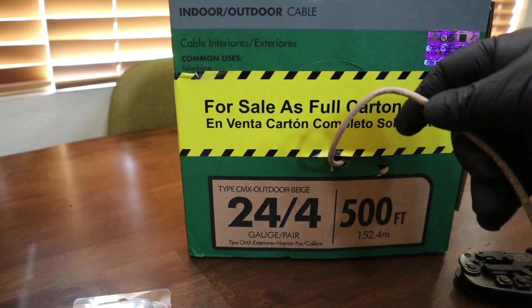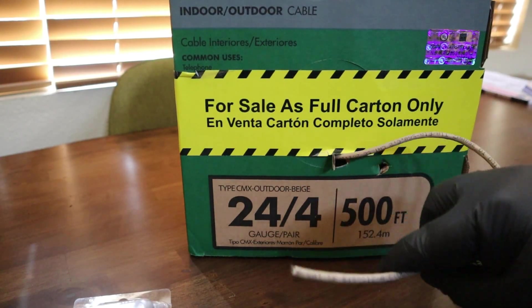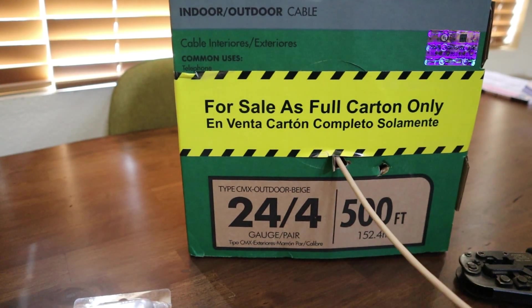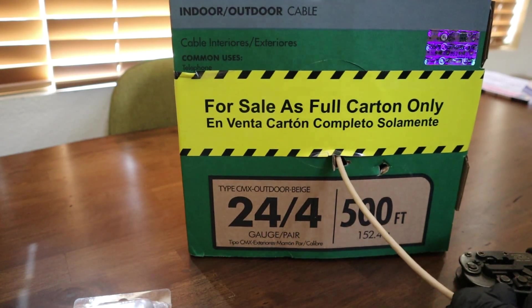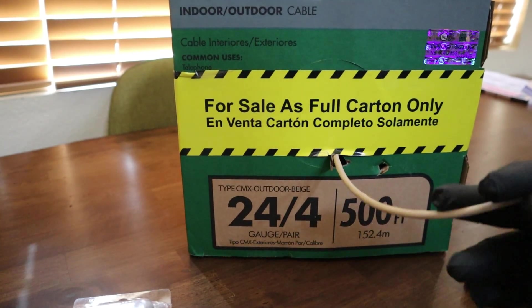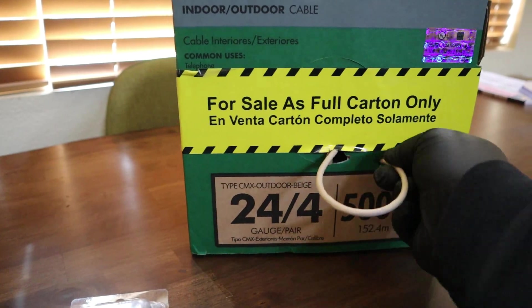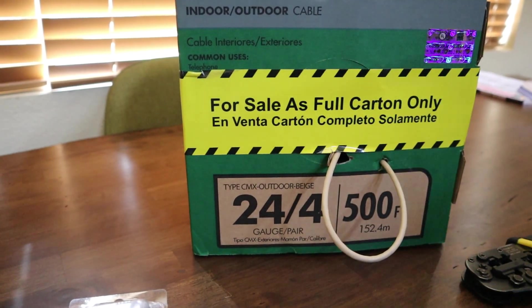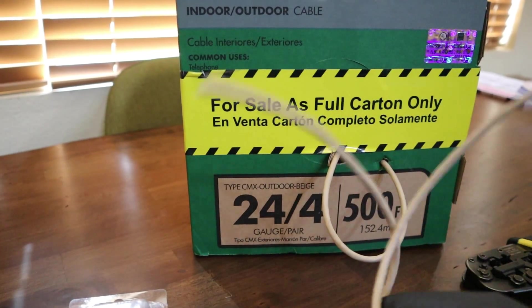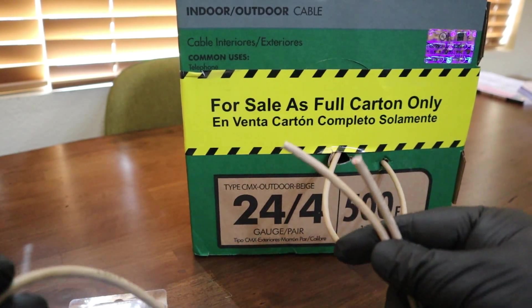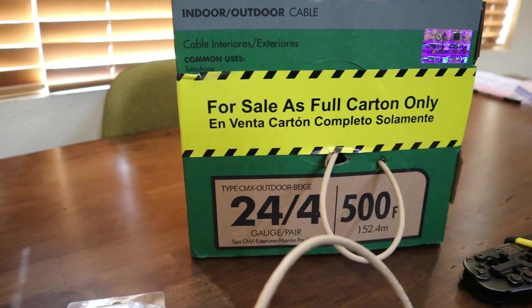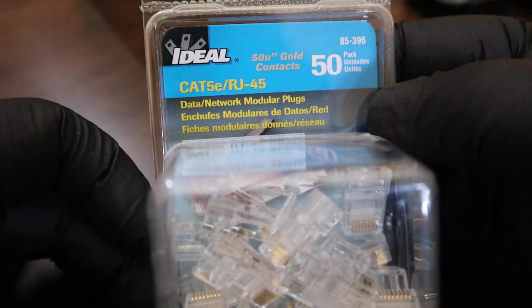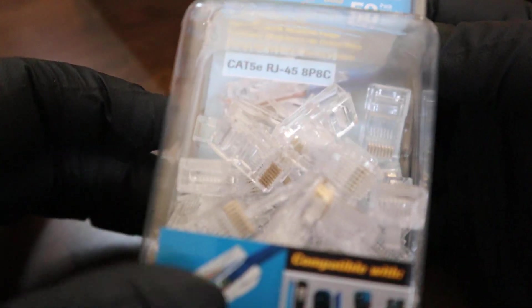So this is my Cat5 wiring that I got from Home Depot. It's just literally 500 feet, it'll say Cat5e indoor outdoor. This is what I use, so I'm just cutting a little piece of it, put it back in so it won't get loose. And here's my Cat5 plugs, same place. I just got these from Home Depot, nothing special.